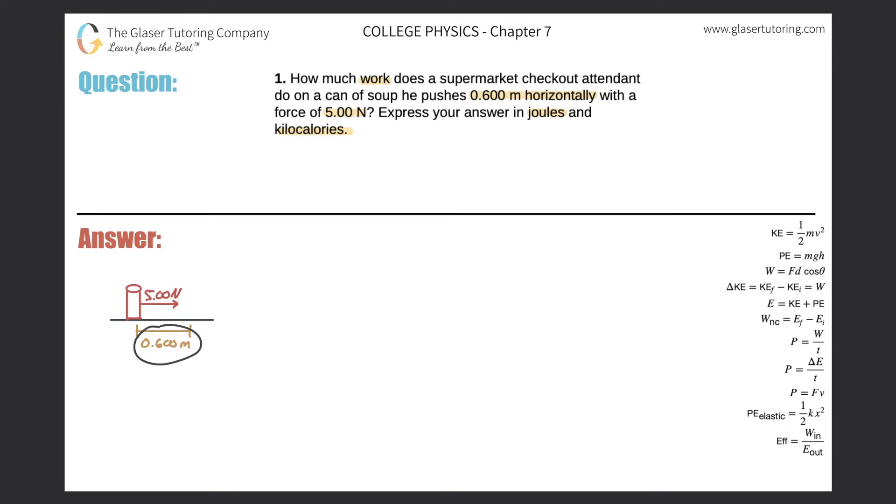Alright, so the can is going to move 0.6 meters to the right horizontally, and the force is also applied to the right horizontally as well.